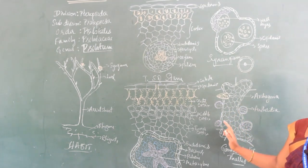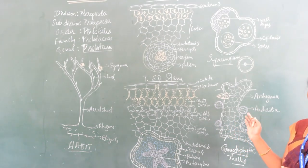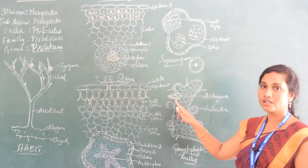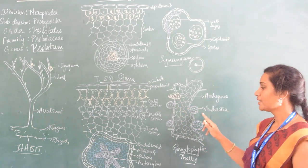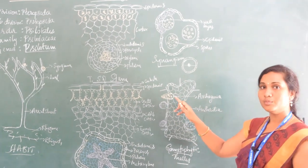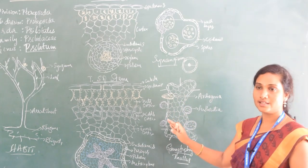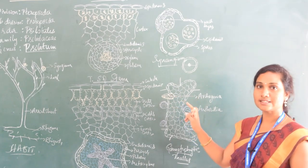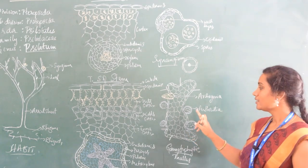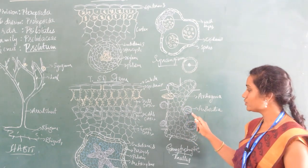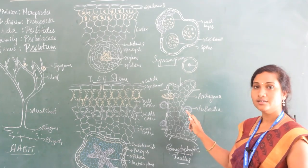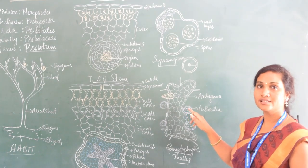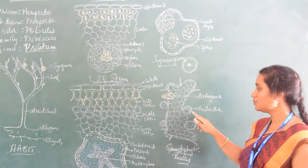When it attains maturity, the gametophytic thallus enters the reproductive stage. It produces antheridia as male reproductive structures and archegonia as female reproductive structures. Both are developed from the outer cells of the gametophytic thallus, called superficial cells. From each superficial cell, sexual reproductive structures are developed. The antheridium has an outermost jacket layer for protection, and inside are antheridial mother cells, which undergo reductional division to produce antherozoids.